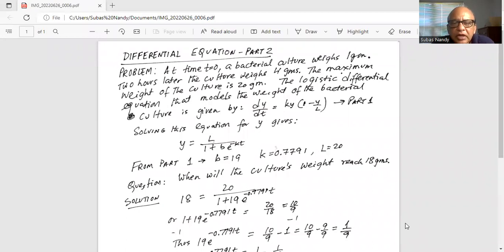Differential equation part two. At time t equal to zero, a bacterial culture weighs one gram. Two hours later, the culture weighs four grams. The maximum weight of the culture is 20 grams.